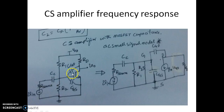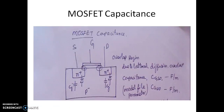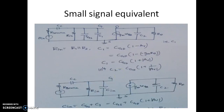In the previous videos we have seen this is an excellent circuit. We have replaced the loading capacitance between the output and the input — the CGT — by C1 and C2 on either side. This is the capacitance associated with the MOSFET. Now you can see C1 and C2, which are an equivalent of CGT.